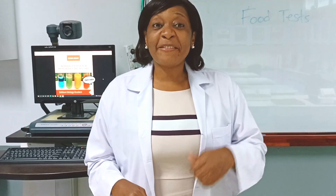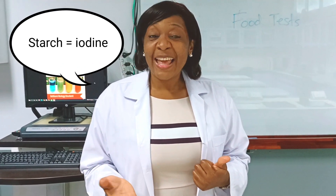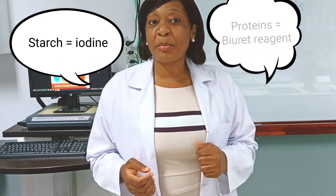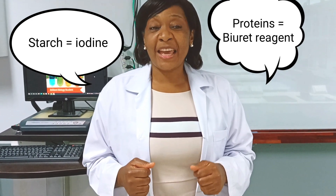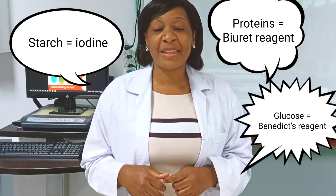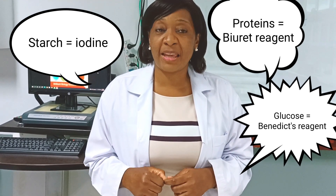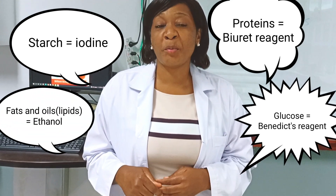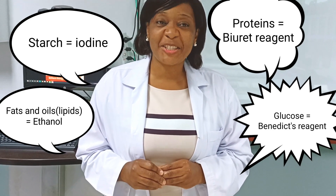The four main types of food tests we'll carry out in this video are: the test for starch, using iodine; the test for proteins, using biuret reagent; the test for glucose, using Benedict's reagent; and the test for fats and oils, using ethanol.